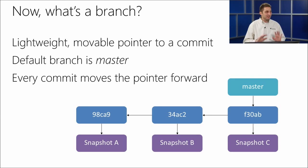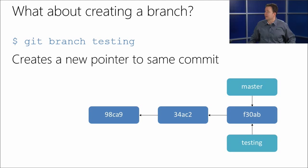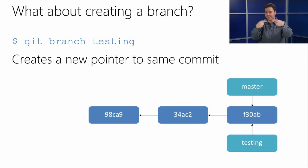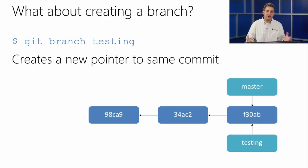So how do you create a branch? It's easy: `git branch testing`. Now you have a branch called testing, and all it's doing is pointing to the same commit as where you are. If you're in master and you create that branch, they both point to that same commit object. Whichever branch you have checked out is the one that's going to move when you do commits.